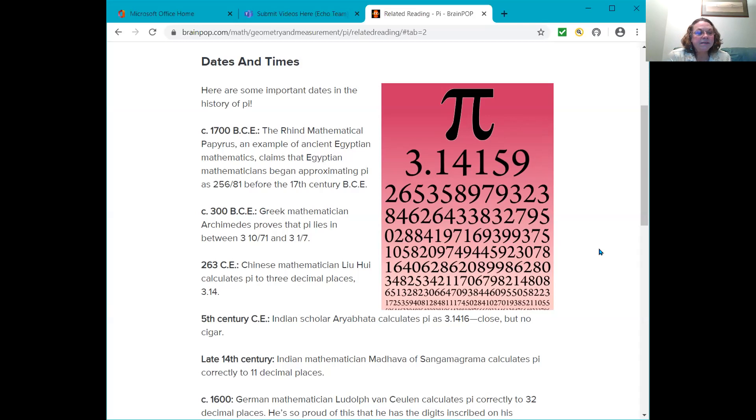In 1700 BCE, the Rhind Mathematical Papyrus, an example of ancient Egyptian mathematics, claims that Egyptian mathematicians began approximating Pi as 256 over 81 before the 18th century BCE. And the next fact, 300 BCE. Greek mathematician Archimedes proves that Pi lies in between 3, 10 over 71 and 3 and 1 7th. So in 263 CE, Chinese mathematician Liu Hui calculates Pi to 3 decimal places. 3.14.